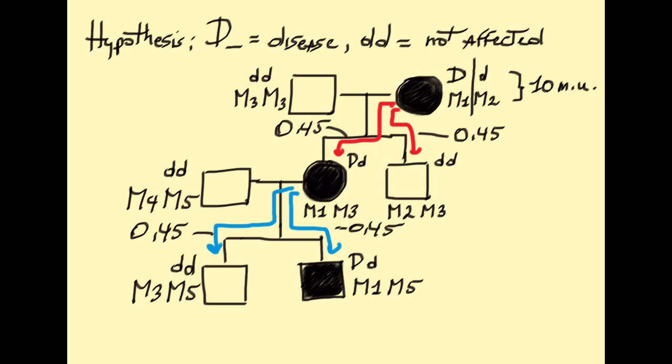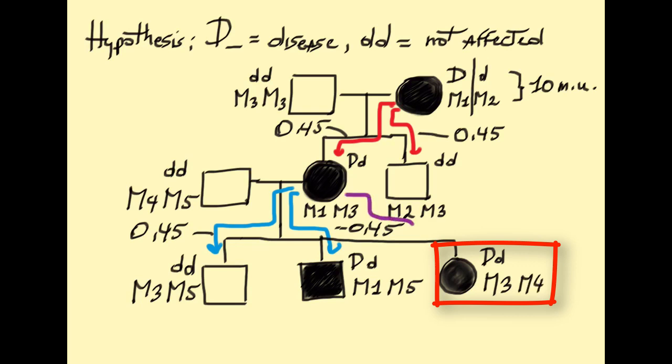Let's add another informative event. A third child, a girl, displays the condition but has genotype m3 m4.